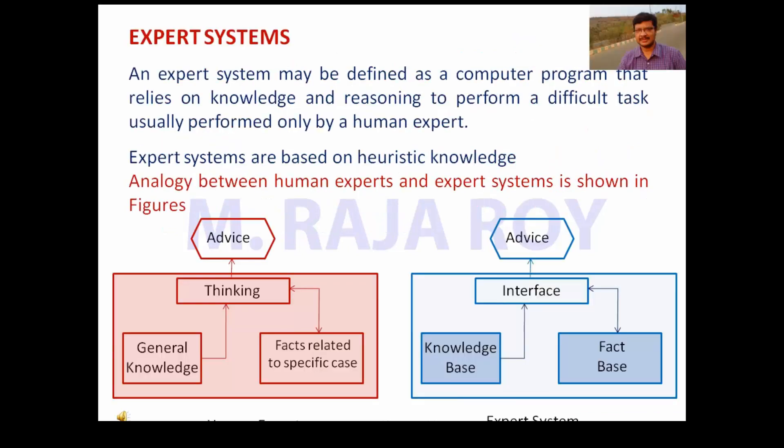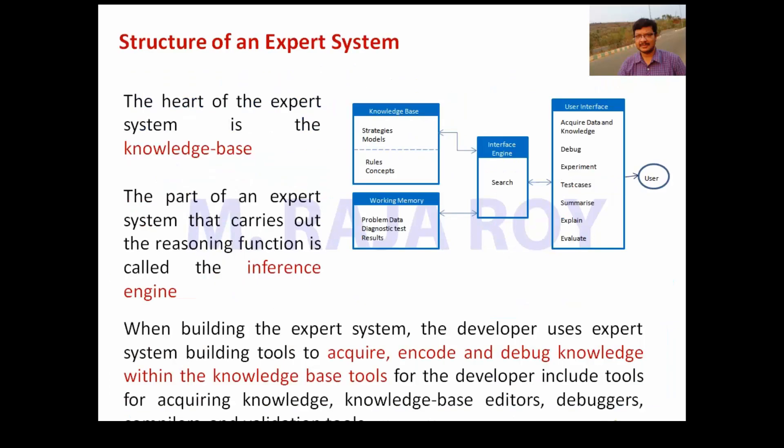Expert systems: An expert system may be defined as a computer program that relies on knowledge and reasoning to perform a difficult task usually performed only by a human expert. Expert systems are based on heuristic knowledge. An analogy between human experts and expert systems is shown in figures. Structure of an expert system: The heart of the expert system is the knowledge base. The part of an expert system that carries out the reasoning function is called the inference engine.